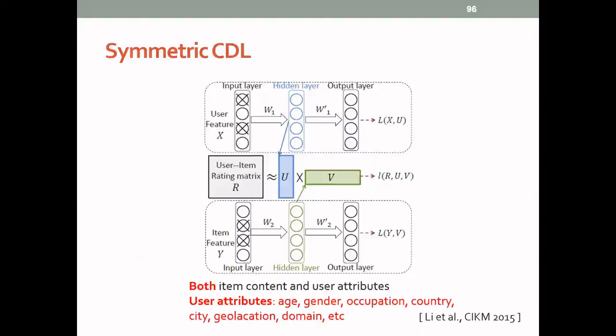But how about the user side? In terms of user, we usually have a lot of user attributes like age, gender, occupation, country, city, etc. And these are all very valuable information to improve the recommendation systems performance.